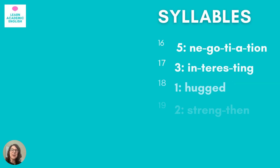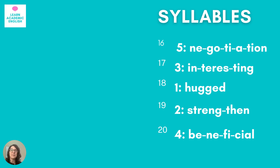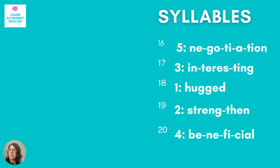Okay, let's go to the next part — syllables. Number sixteen: 'negotiation' — that should have five syllables. Number seventeen: 'interesting' — I said this word with three syllables. Some people say 'interesting' or 'in-ter-est-ing,' which would have four syllables, but the commonly pronounced form is three syllables. Number eighteen: 'hugged' — that's one syllable. Number nineteen: 'strengthen' — if your native language is Spanish or Portuguese you might think it has three syllables, but we say 'strengthen' with just two. And number twenty: 'beneficial' — four syllables.